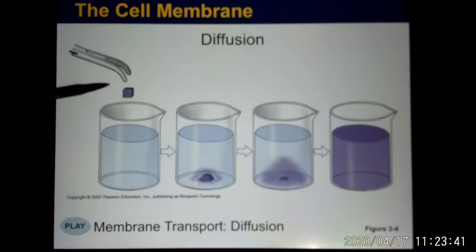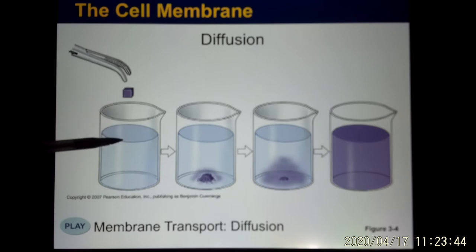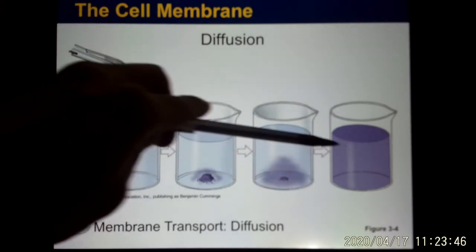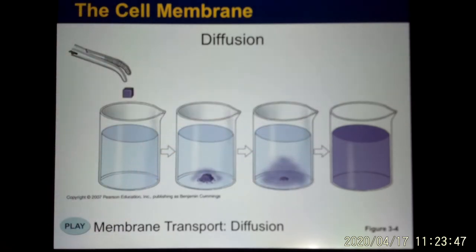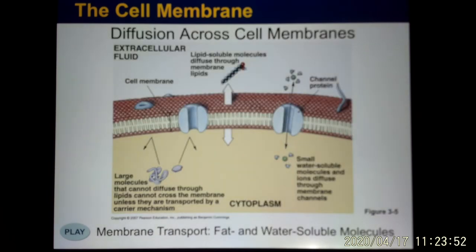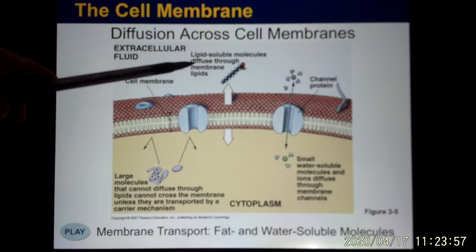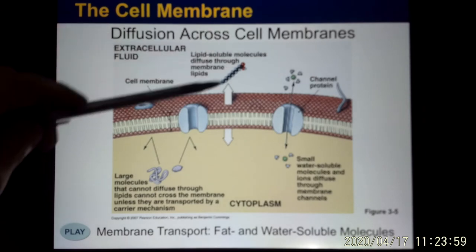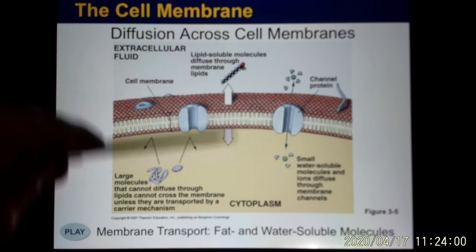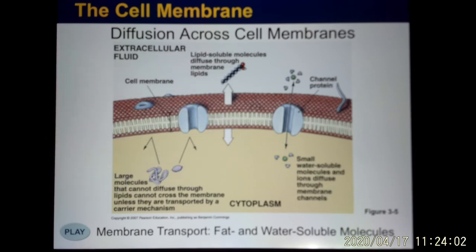In diffusion, molecules move from high concentration to low concentration and eventually form a homogeneous solution at the same concentration. If the molecule can go through the cell membrane — like lipid or lipid-soluble molecules such as steroids — they can simply diffuse through. That mechanism is called simple diffusion.